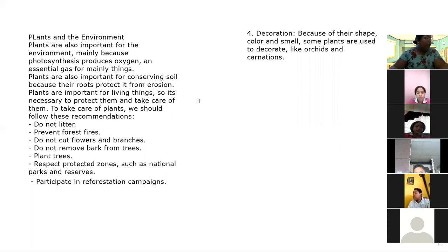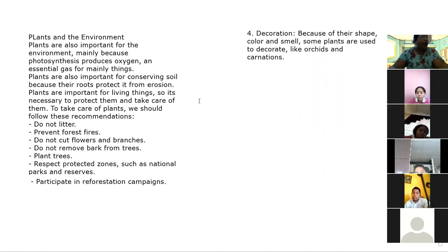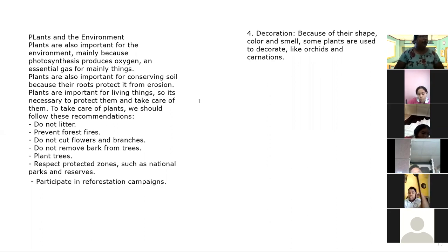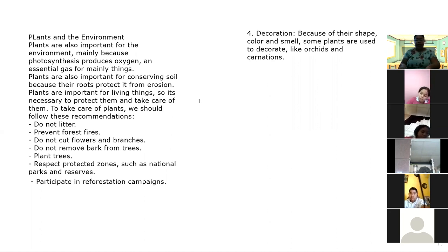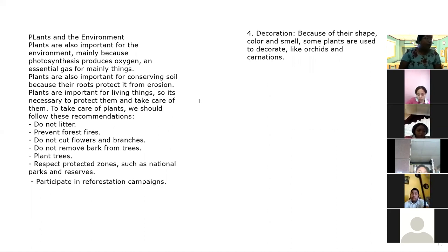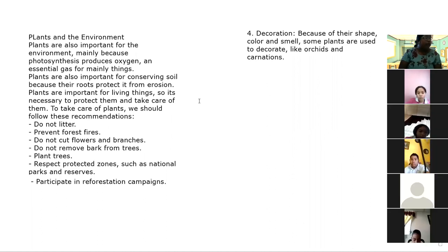And the last point: plants in the environment. Plants are also important for the environment, mainly because photosynthesis produces oxygen, which is an essential gas for most living things. Plants are also important for preserving soil because their roots protect it from erosion. Plants are important for living things, so it's necessary to protect them. To take care of plants, we should: not litter — meaning don't leave trash in public places; prevent forest fires; do not cut flowers and branches; do not remove bark from trees; plant trees; respect protected zones such as national parks and reserves; and participate in reforestation campaigns.